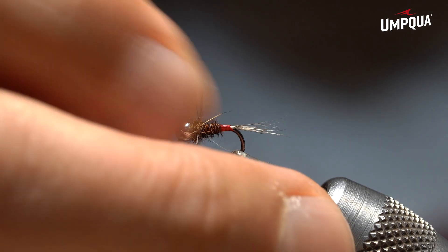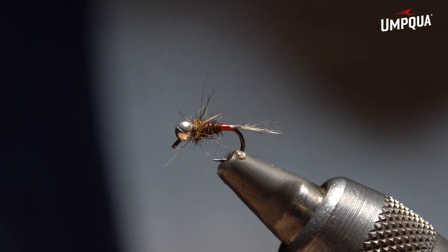All right, and there you go. A little pheasant tail on the new Umpqua Perry jig.